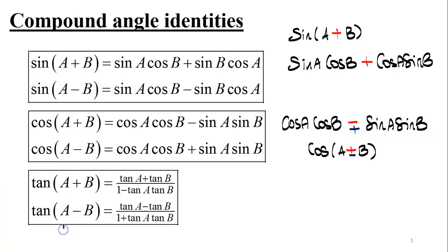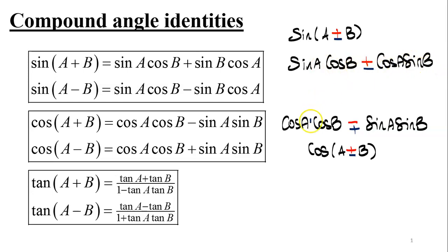The sign between the two terms in the sine identity matches the sign separating a and b. Consequently, sine of a minus b subtracts the two terms: sine a cosine b minus cosine a sine b.